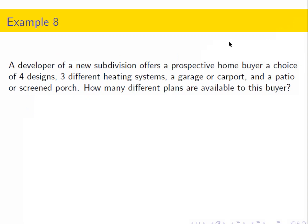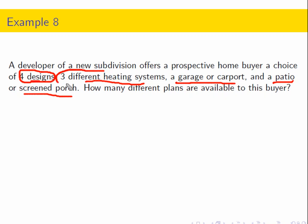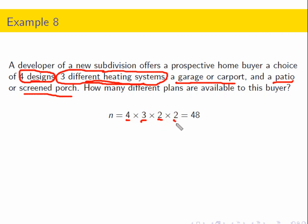These homebuyers are picking from four different floor plans, three different heating systems, a choice between a garage or carport, and a choice between a patio or screened porch. This is a Cartesian product. The first set has four options, the next has three, then two and two. So it's 4 × 3 × 2 × 2 = 48 total options.